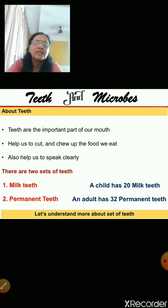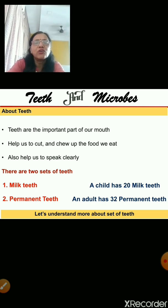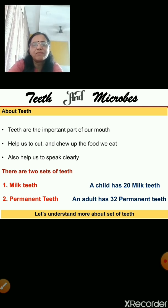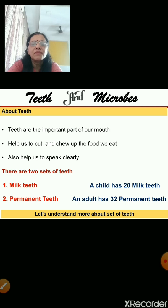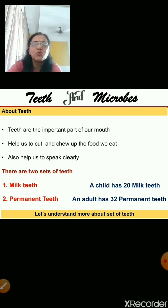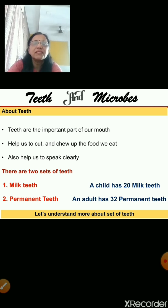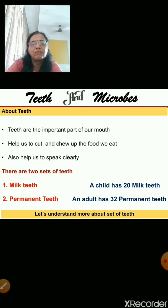There are two types of teeth that we get in our lifetime. First is milk teeth, and the other is permanent teeth. Milk teeth are 20 in number, and permanent teeth are 32 in number.